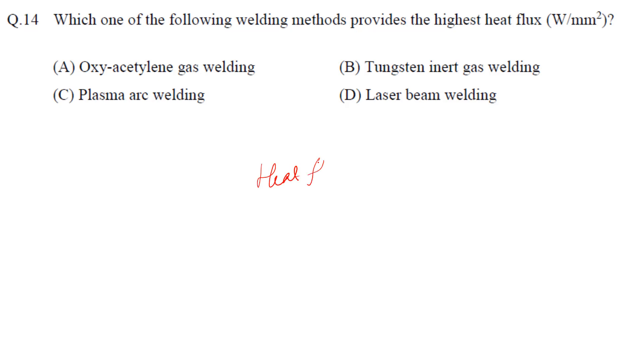Which one is going to provide highest heat flux? We know heat flux is heat transferred per unit area, right? That means for a certain amount of area, what is the amount of heat over there? So we know that laser beam welding has the maximum power density. Power density means the power is confined in a very small area, so basically that means the heat will be also concentrated in a very small area. That's why the heat flux will be high.